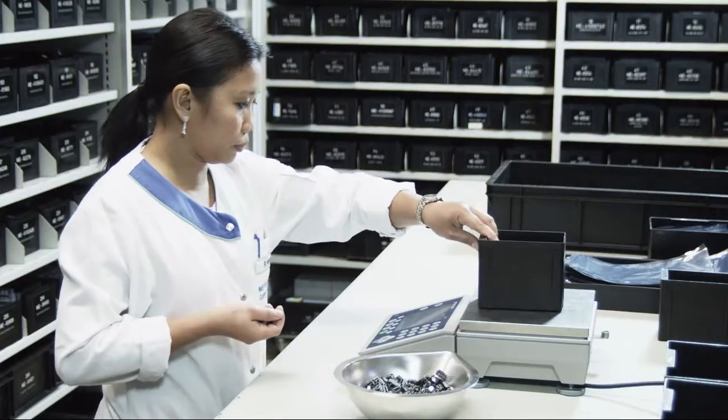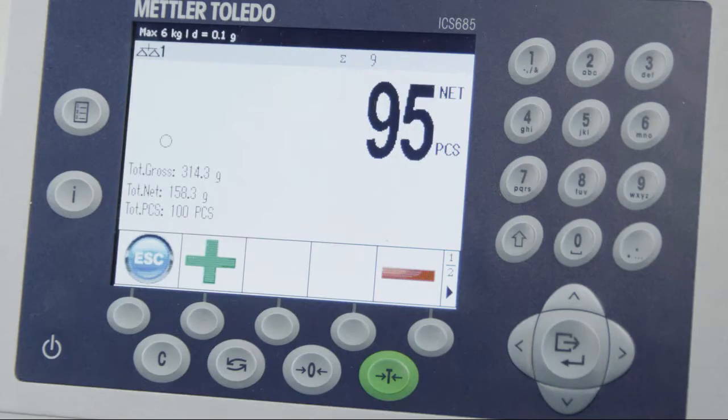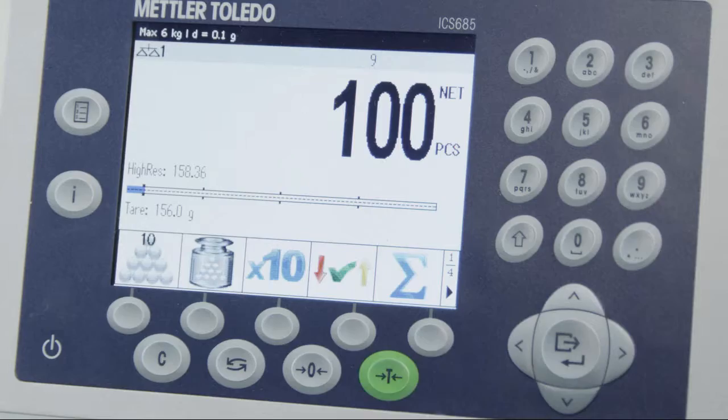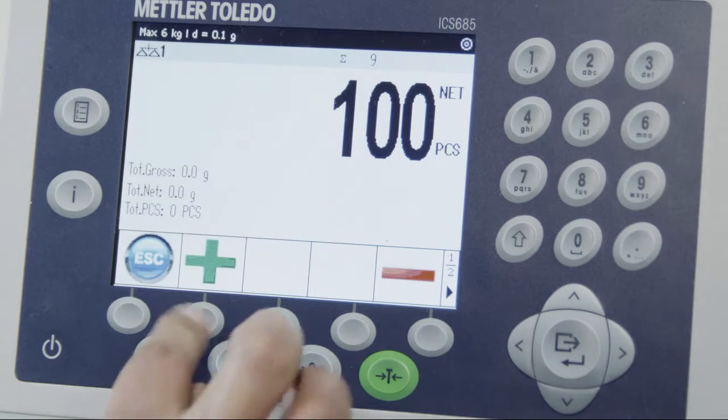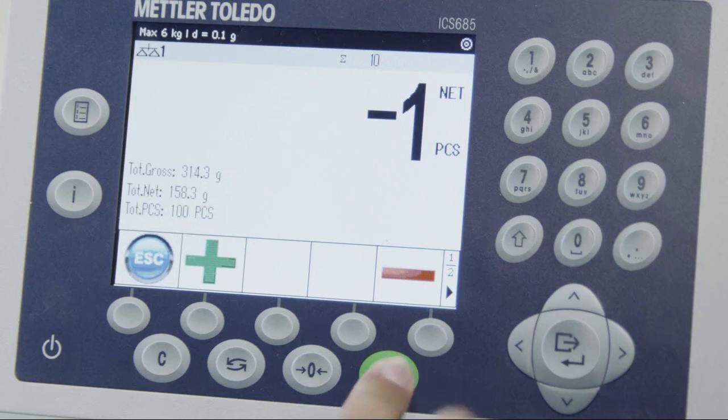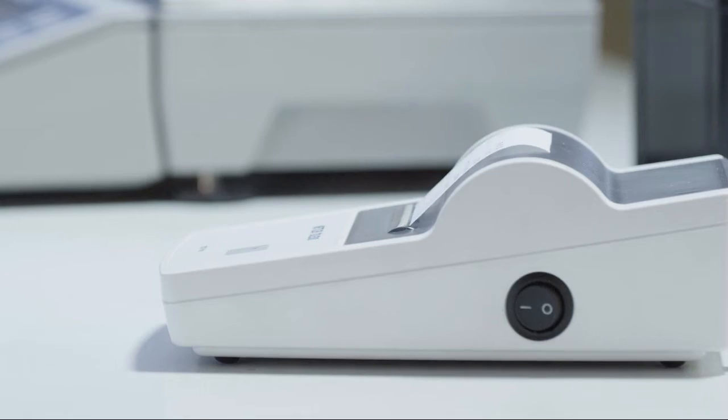The scale can process thousands of articles efficiently. The smart totalizing function accumulates previously counted quantities into a final total. Results are documented to conform with tracking and tracing requirements or according to your customers' needs.